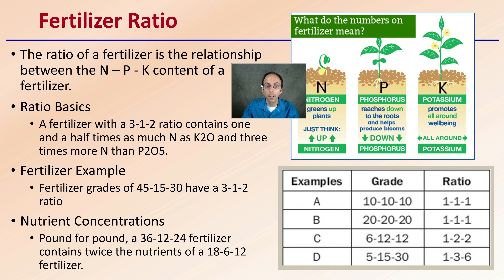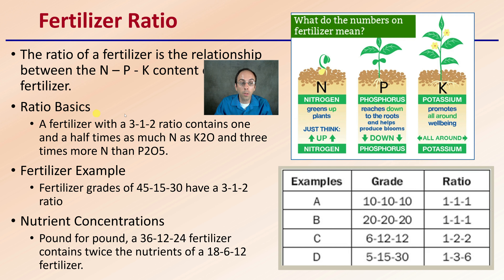The fertilizer ratio is still expressed in the same nitrogen, phosphorus, and potassium form. The ratio represents the relationship between NPK content in a fertilizer. For example, a fertilizer with a 3-1-2 ratio contains more than twice as much nitrogen as potassium, and three times more nitrogen than phosphorus. A fertilizer grade of 45-15-30 has a 3-to-1-to-2 ratio. These ratios are important for different stages of growth. Here we see some grades and ratios as examples.